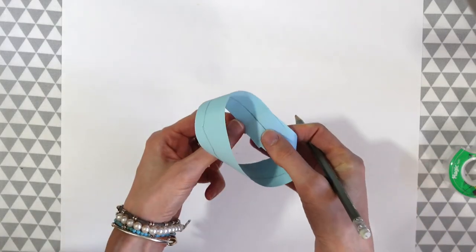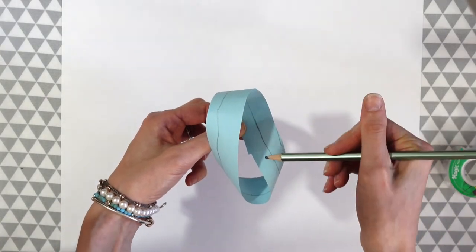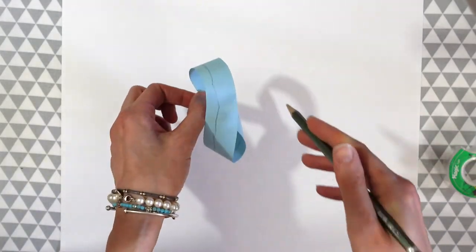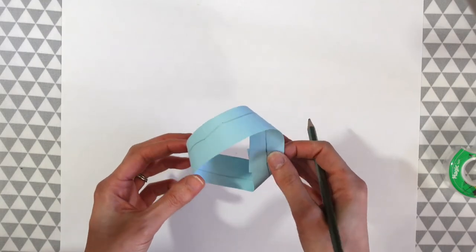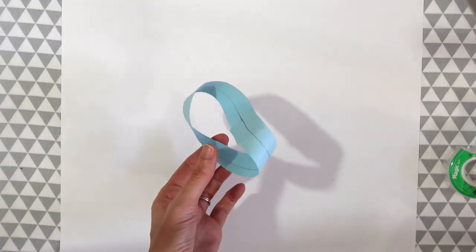So notice that our lines meet. We've now got back to the beginning of where we started and we drew a line around the entire thing without lifting our pencil. So that's why the Mobius strip is so cool. It has one surface even though it is two dimensional.